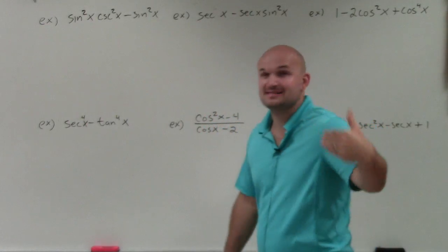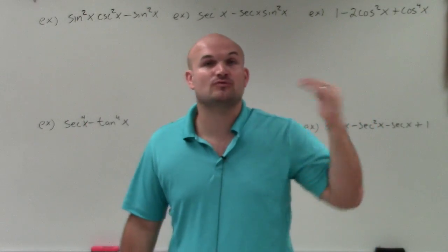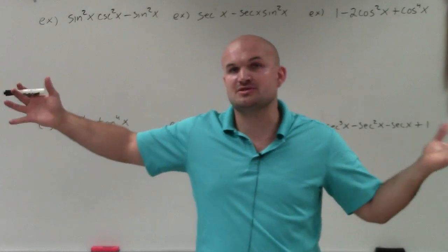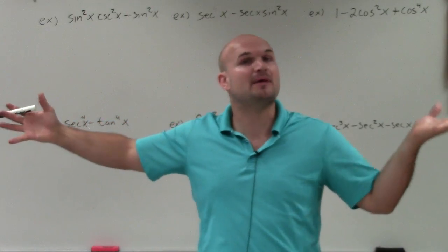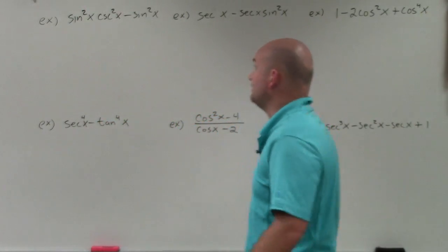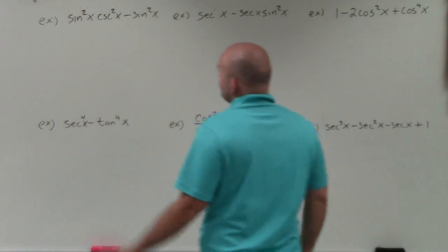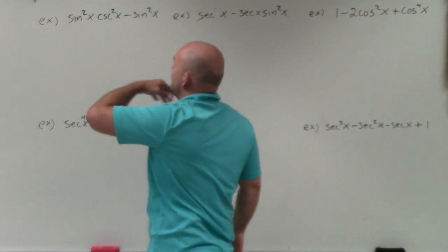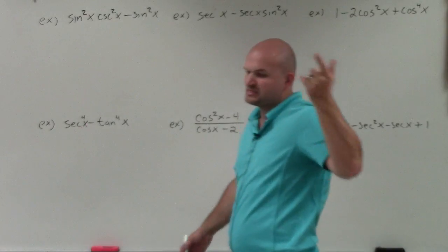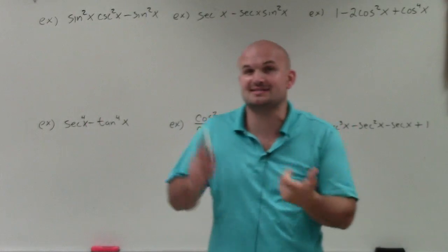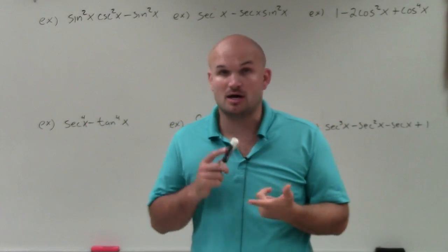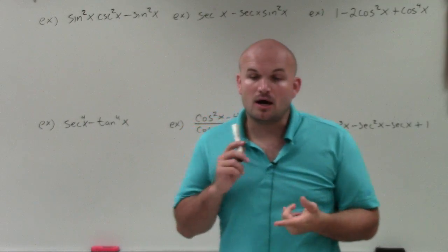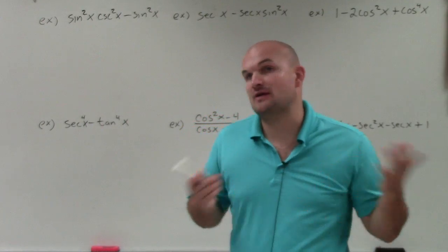Now, if you get stumped, what I recommend is rewriting these expressions with numbers and variables so it looks like a polynomial or a quadratic. For instance, we have sine squared of x times cosecant squared of x minus sine squared of x. Remember when we're simplifying, we're trying to get this down to one single term or expression — a trigonometric expression — or down to a single number.